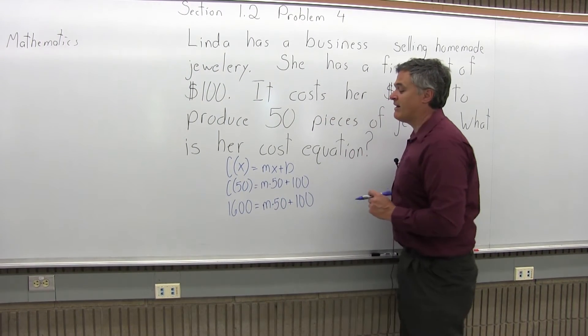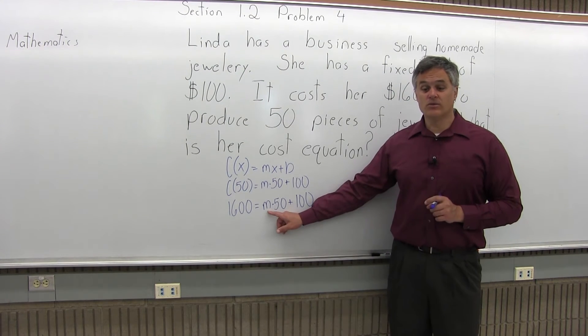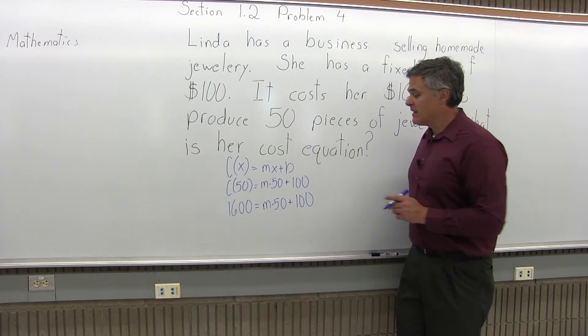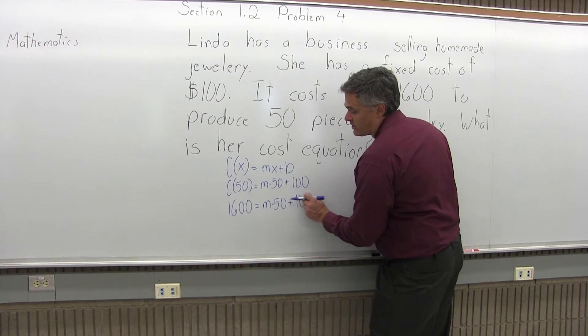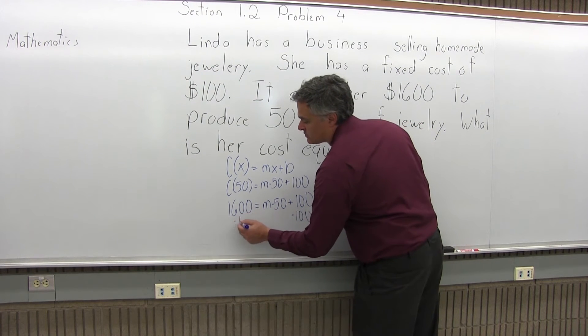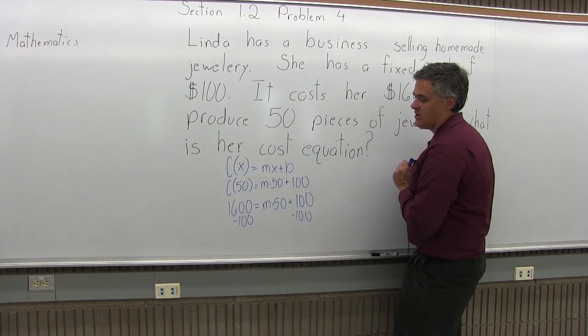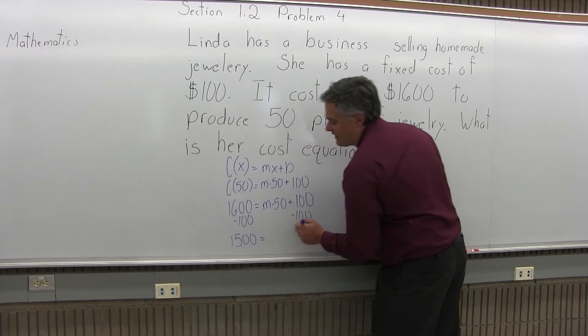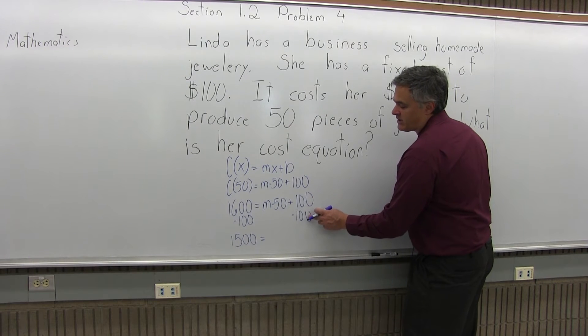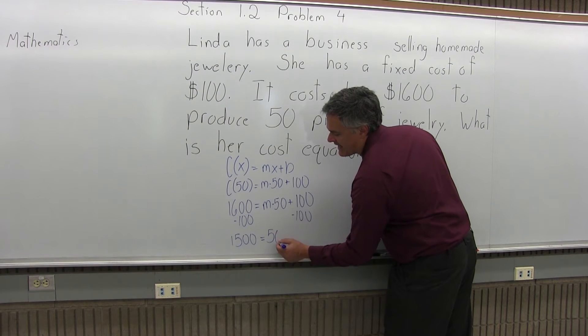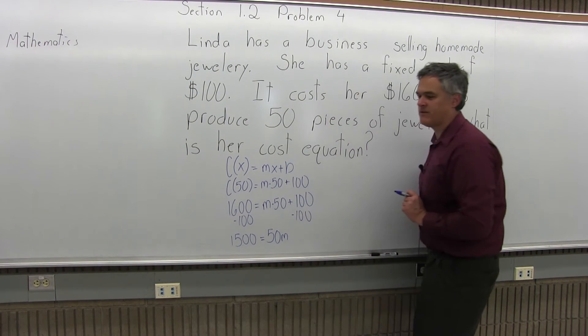At this point, we have an equation with one unknown, so we'll just get the numbers on one side and isolate the M. Let's start by moving the 100 over to the left by doing minus 100 on both sides of the equation. On the left side, 1600 minus 100 gives me 1500, and on the right side, the positive 100 and negative 100 cancel, leaving 50M.